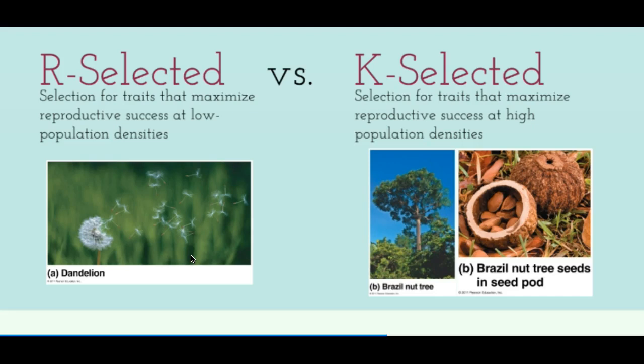We call this the r-selected strategy because r is the intrinsic rate of increase — it operates below the carrying capacity. K stands for carrying capacity, so the K-selected strategy works better at high population density. K-selected species produce very few offspring, and those offspring are larger with more energy invested in each one. K-selected reproductive strategy also typically comes with long, attentive parental care. The very few offspring produced are likely to survive in the environment because they only produce very few seeds but with very good endosperm providing plenty of nutrients.